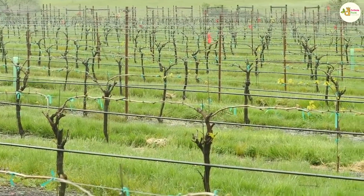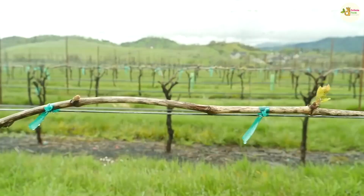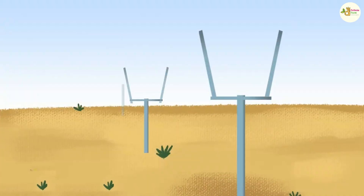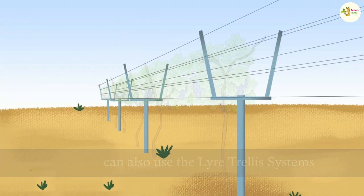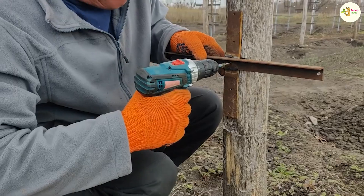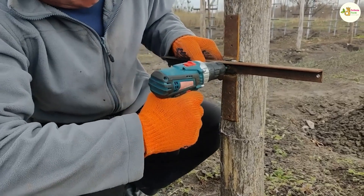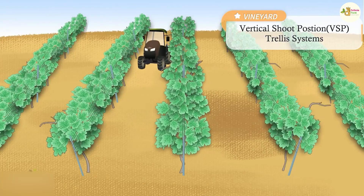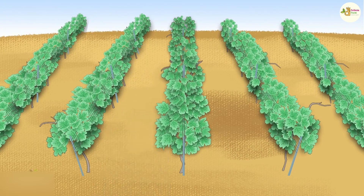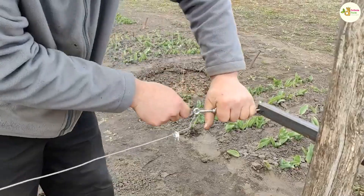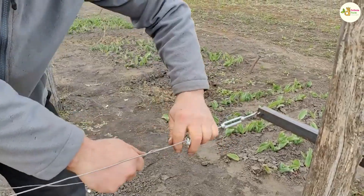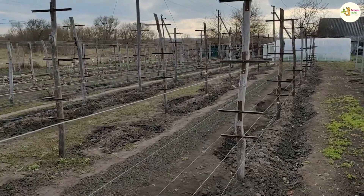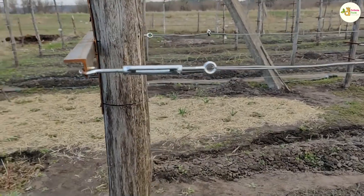Grape plants need to climb a trellis, so after planting it is necessary to build one. The trellis height is about 1.8 to 2 meters for ease of movement and care. Each vine needs a trellis stake — wooden or iron — so the vine can climb. Use wire with a diameter of 1.5 to 2 millimeters stretched from pillar to pillar to form a square grid of 25 to 30 centimeters. Then fix the grape branches on the prepared trellis.